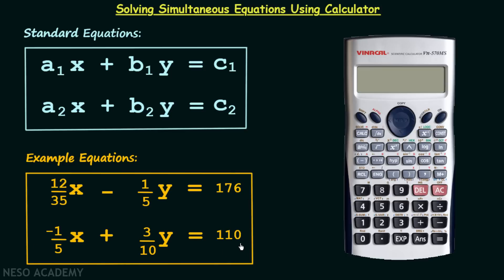In the second equation a₂ is equal to minus 1 over 5, b₂ is equal to plus 3 over 10, and c₂ is equal to 110. So in this way we now have the basic understanding of the simultaneous equations having the two variables.